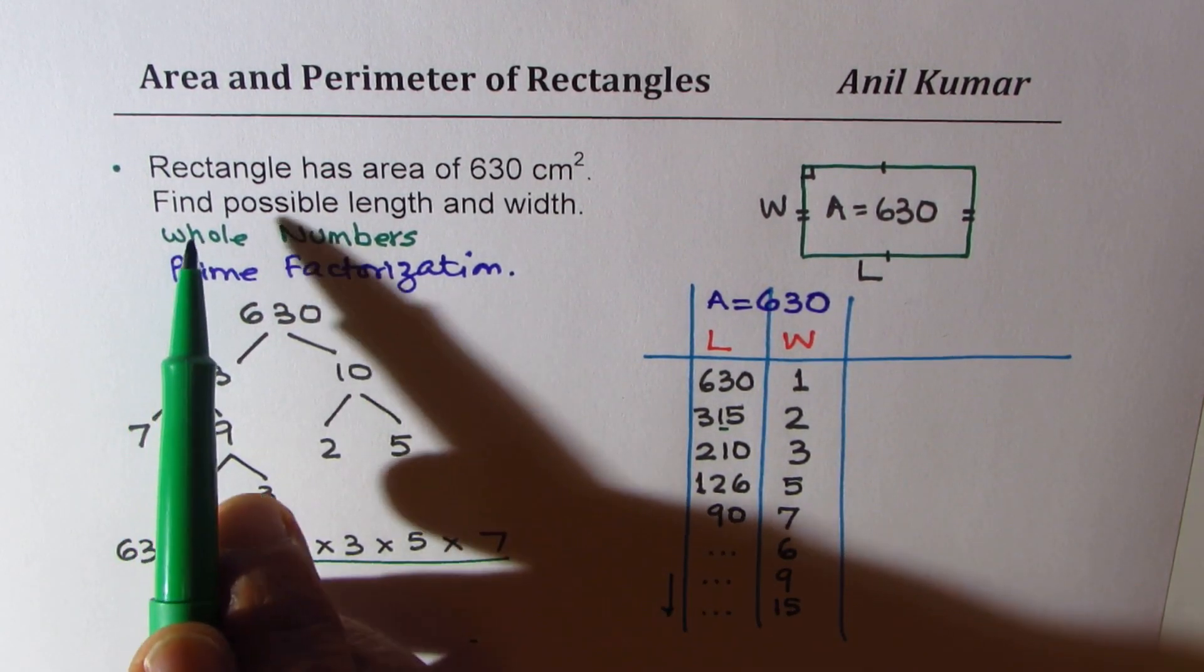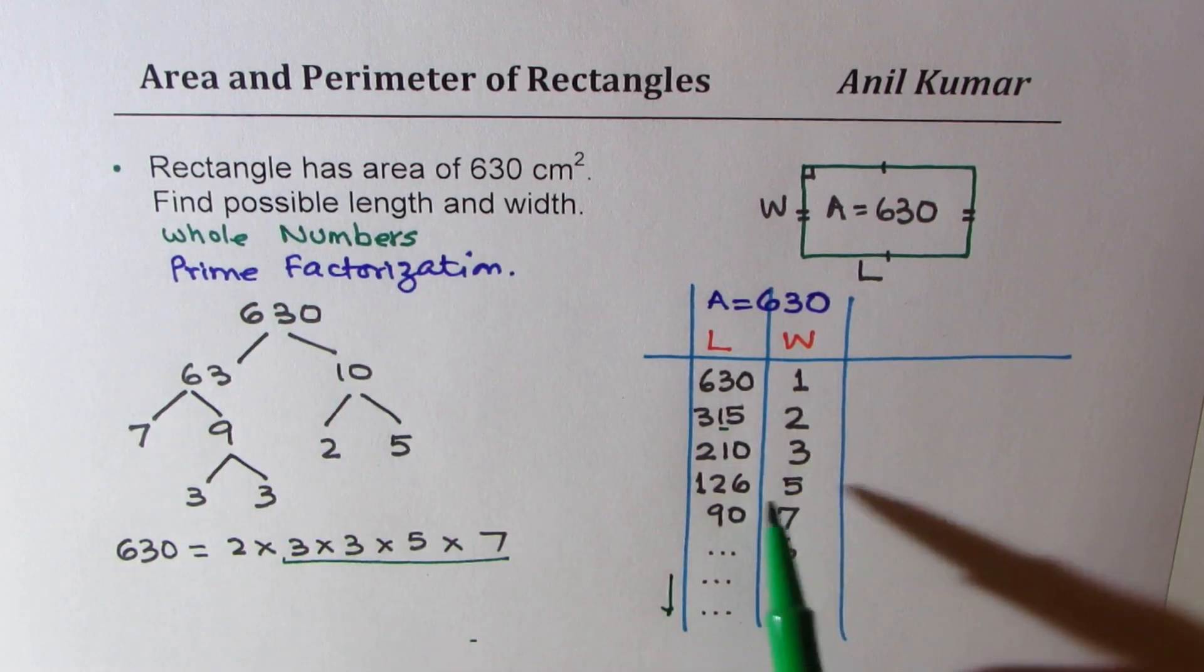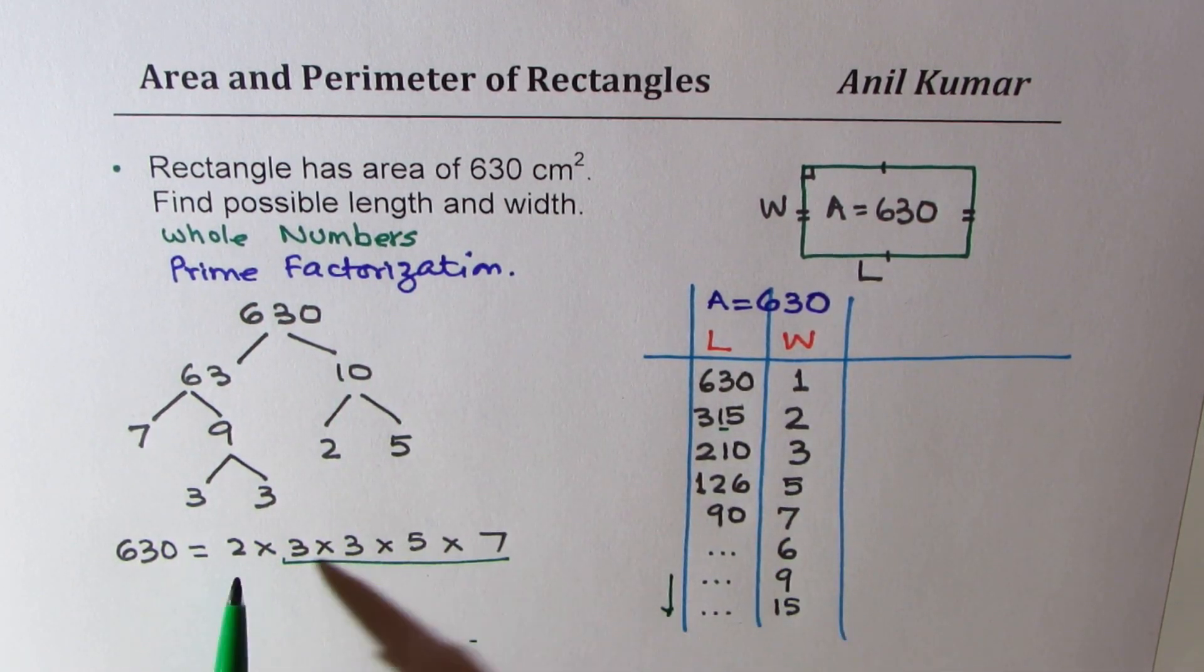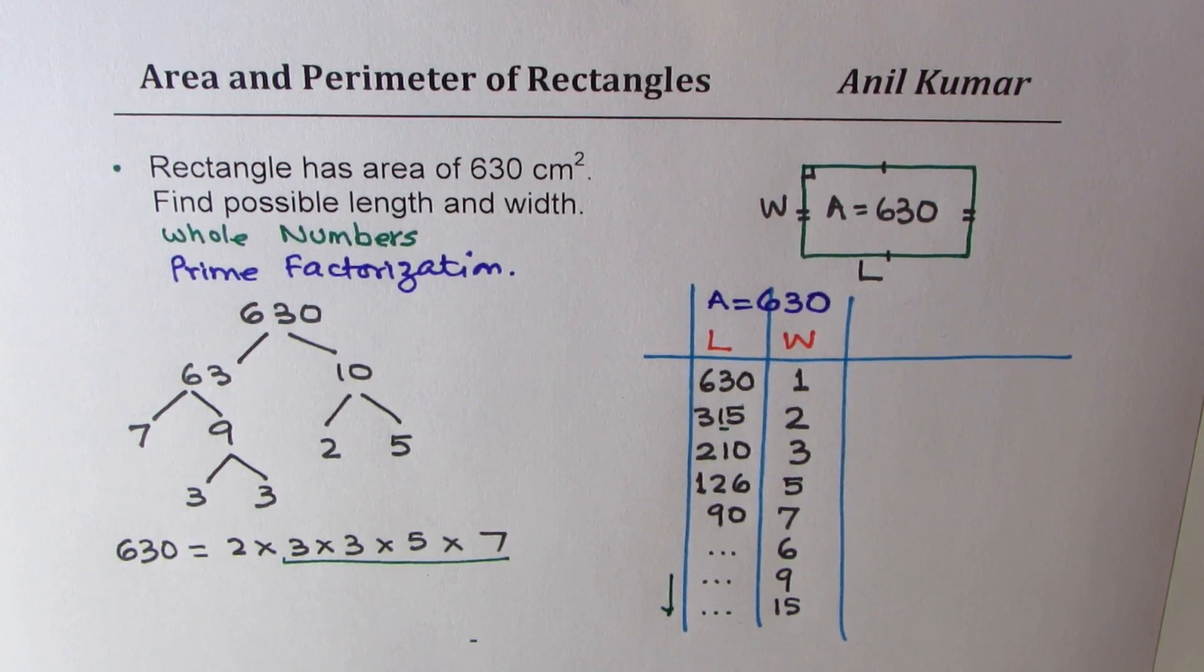So likewise, continue this list. So my suggestion is that you continue this list to get other possible numbers. The equation is find all possible length and width. So you need to go and exhaust your list. So that is how you can get different combinations.